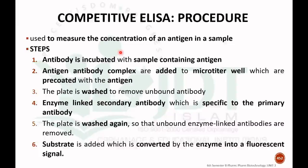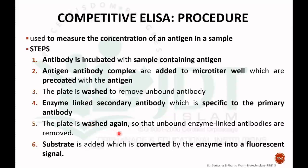The third type is competitive ELISA, mainly used to measure the concentration of antigen in a sample. First, antibody is incubated with the sample containing antigen. Then the antigen-antibody complexes are added to a micro titer well pre-coated with antigen. The plate is washed to remove unbound antibody. An enzyme-linked secondary antibody specific to the primary antibody is added, the plate is washed again, and then a substrate is added which is converted by the enzyme into a fluorescent signal. The intensity of color is measured by spectrophotometric methods to determine the concentration of antigen.